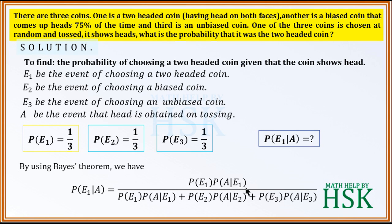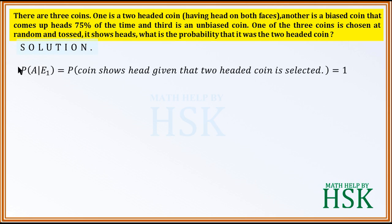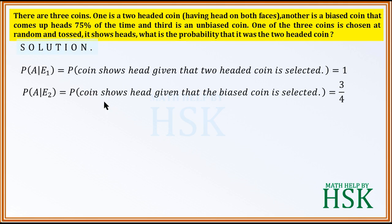We need to calculate three conditional probabilities. P(A|E1) is the probability that the coin shows head given the two-headed coin is selected — this equals 1, since it is a sure event that head is always obtained. P(A|E2) is the probability of head given the biased coin is selected — since the biased coin shows head 75% of the time, this equals 3/4.